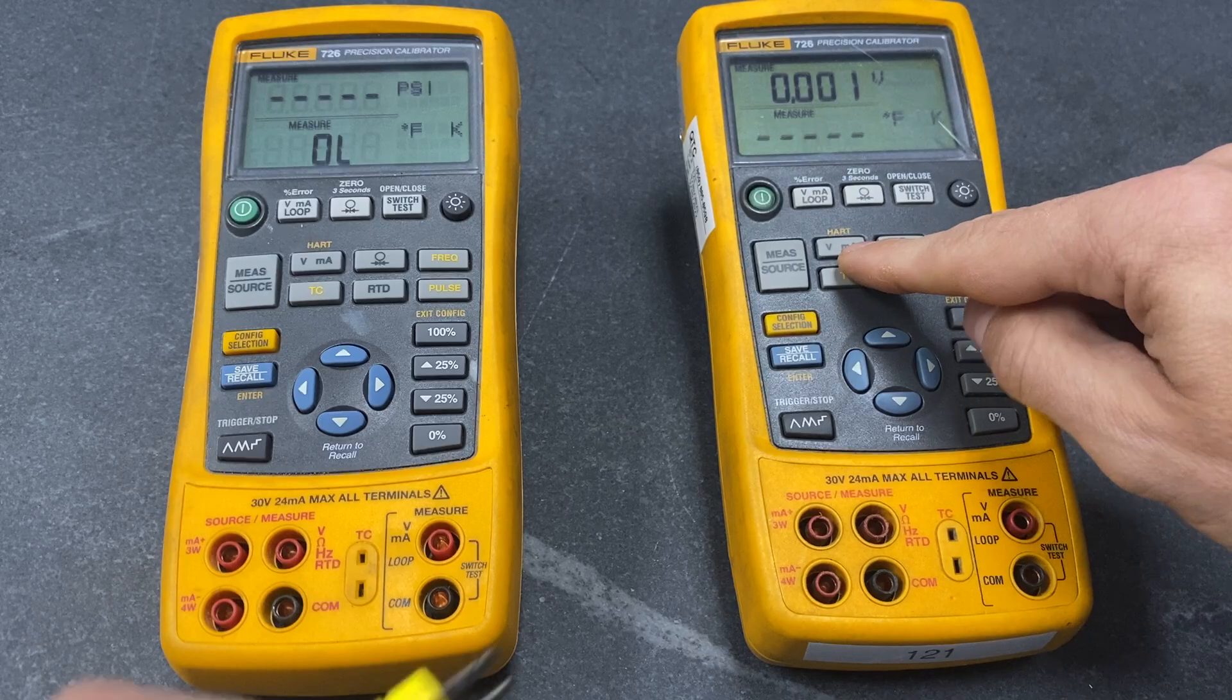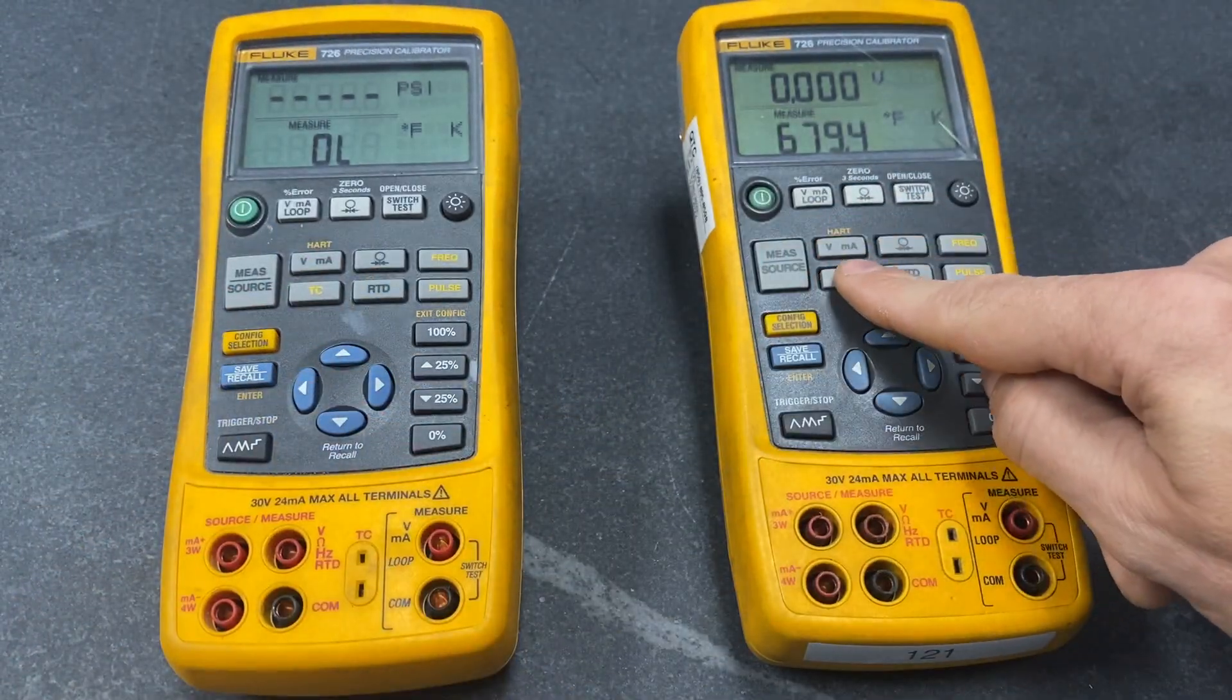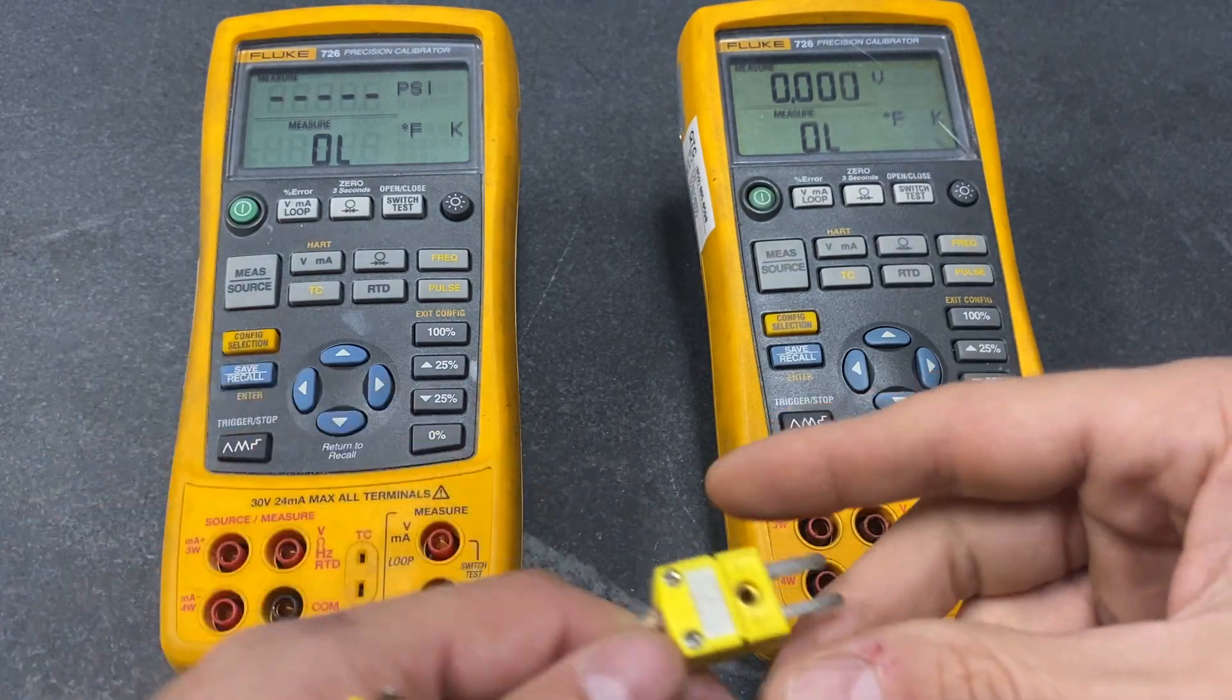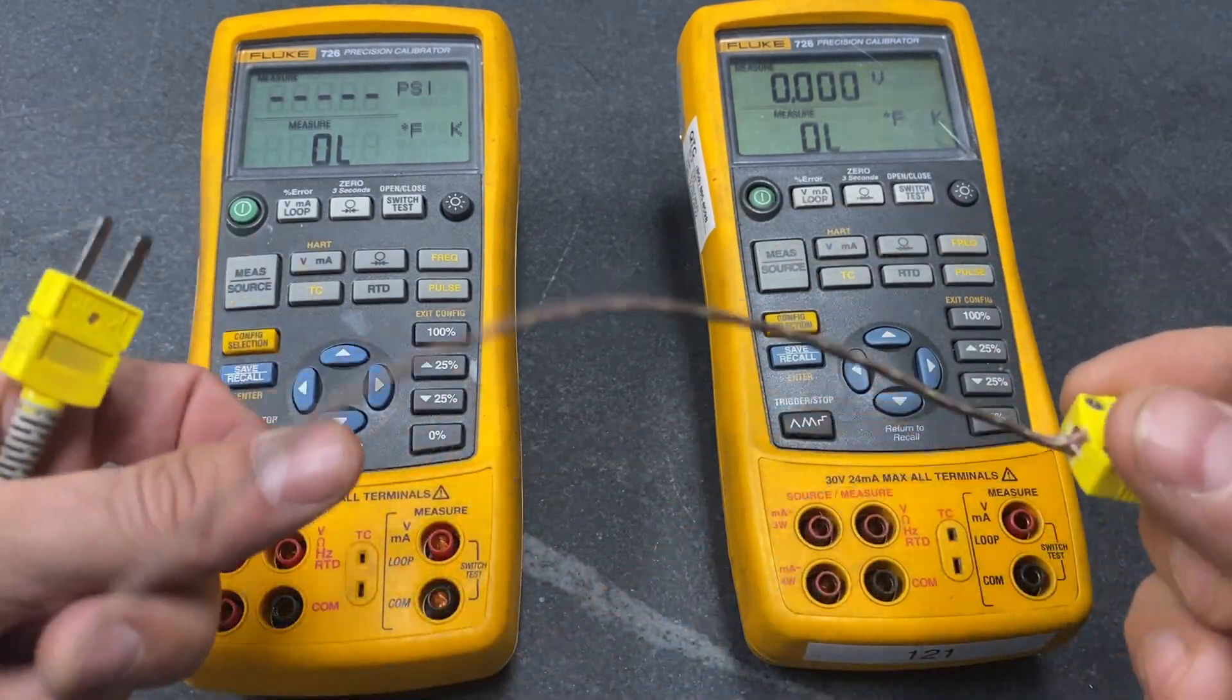We're going to use type K, which is one of the most common ones. So we set both units to K and I will use my K thermocouple cord.